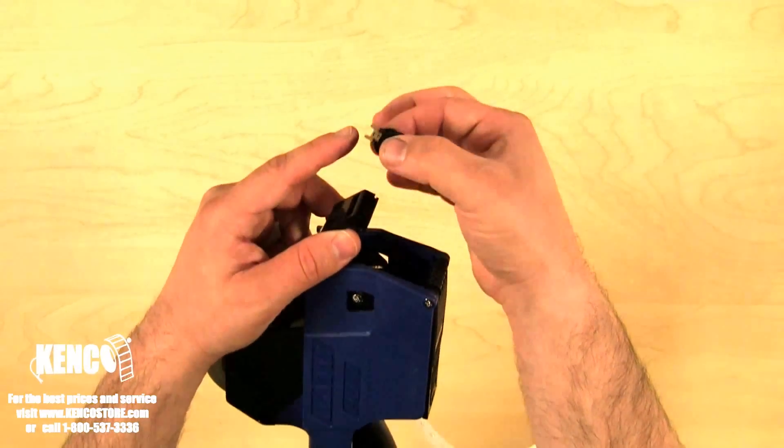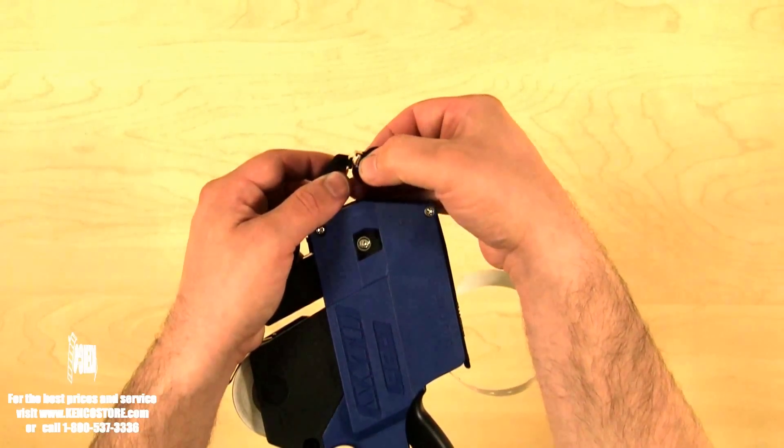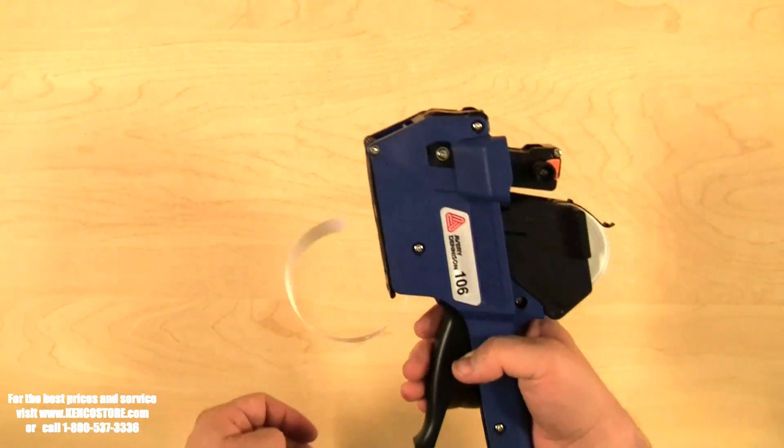It's got little tongues and grooves. You can kind of see, so it slides right back on there. And that's how you would change the ink roller.